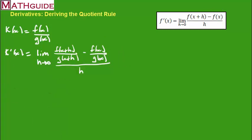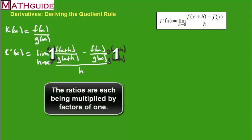So let's get a common denominator. So let's take this and multiply it by g of x plus h, top and bottom. I'm going to multiply top and bottom here by g of x. And you can see now that these two ratios have the same denominator. Okay, so I can now continue on.